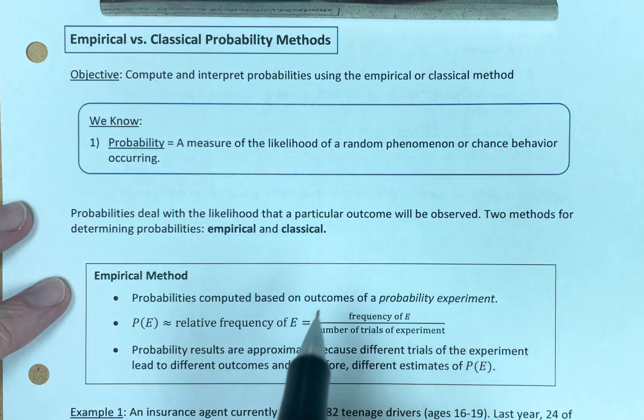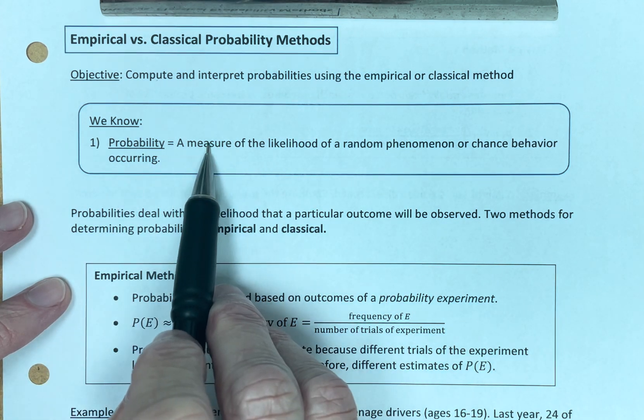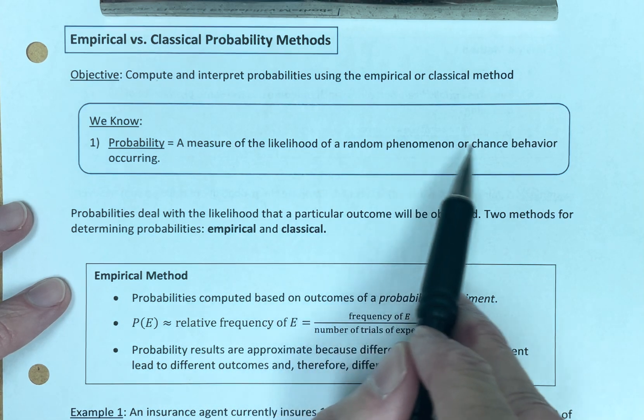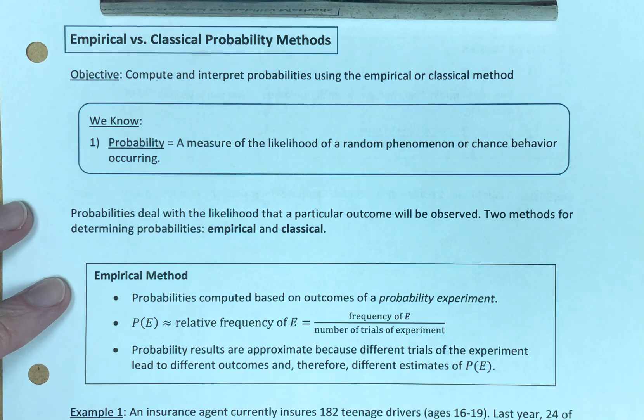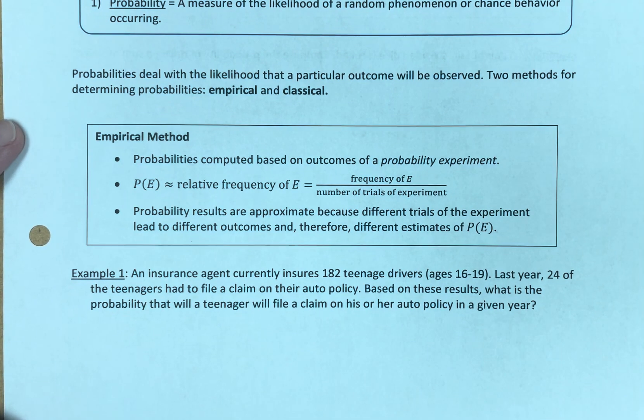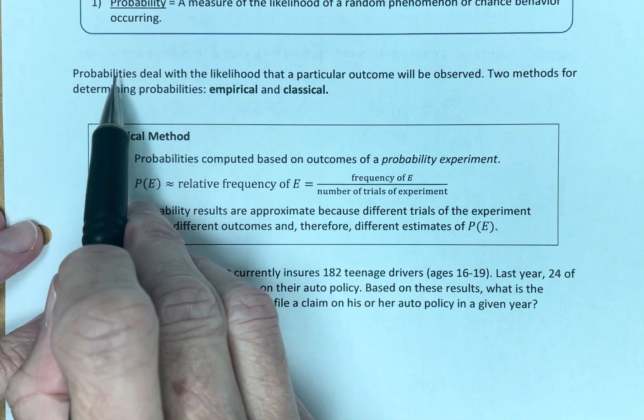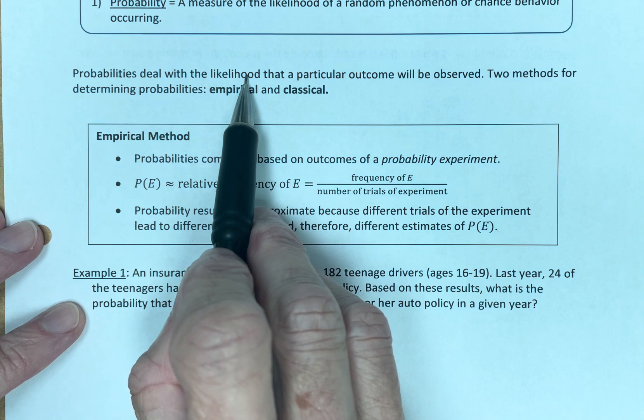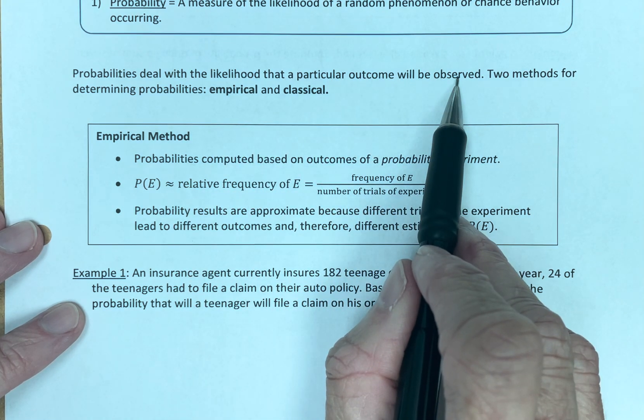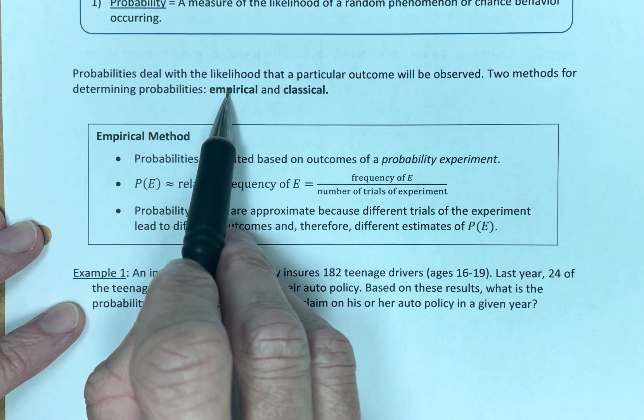Let's remind ourselves what we know. We know the definition of probability: a measure of the likelihood of a random phenomenon or chance behavior occurring. So let's talk about this empirical versus classical stuff. Probabilities deal with the likelihood that a particular outcome will be observed. There are two methods for determining probabilities: empirical and classical.